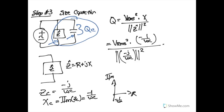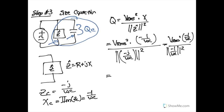So we have VRMS² times negative one over ωC on top, and one over ω²C² on the bottom. Multiplying both numerator and denominator by ω²C², we end up with Qc = -VRMS² × ωC. This is the reactive power caused by the capacitor.